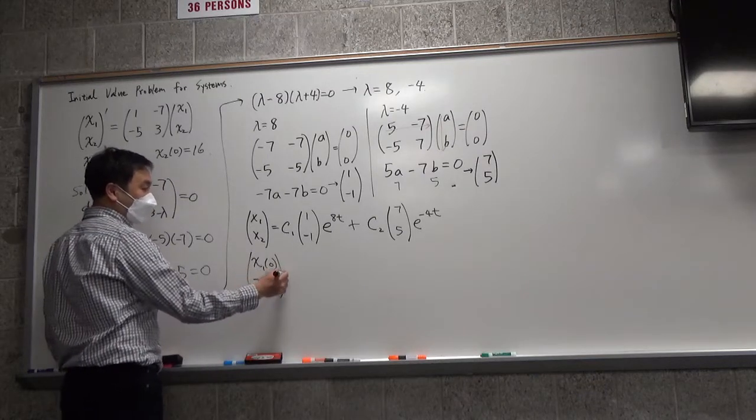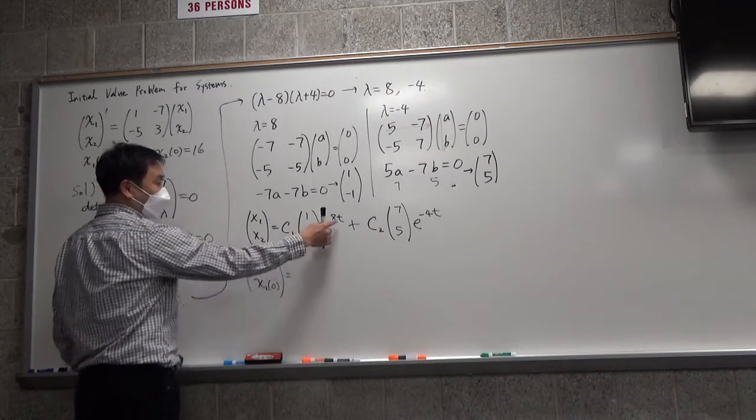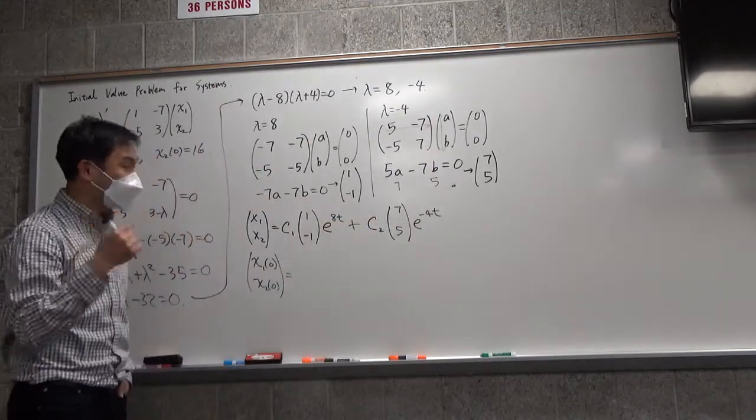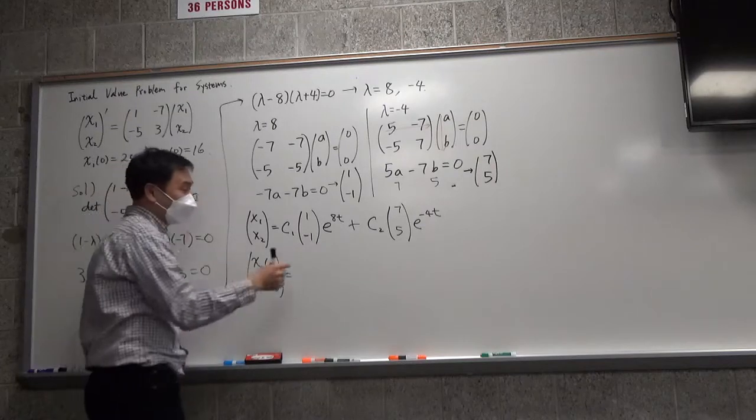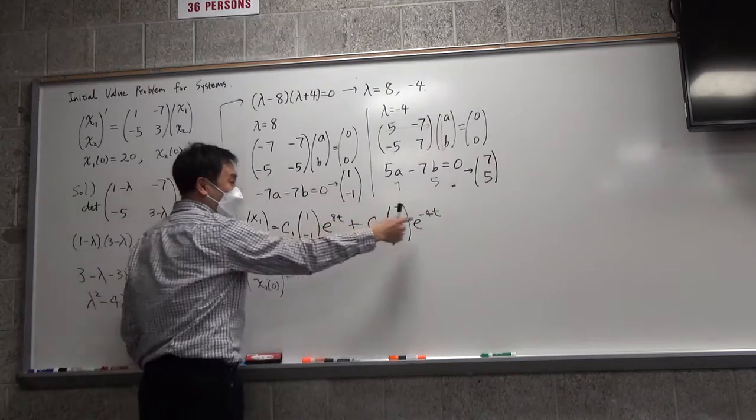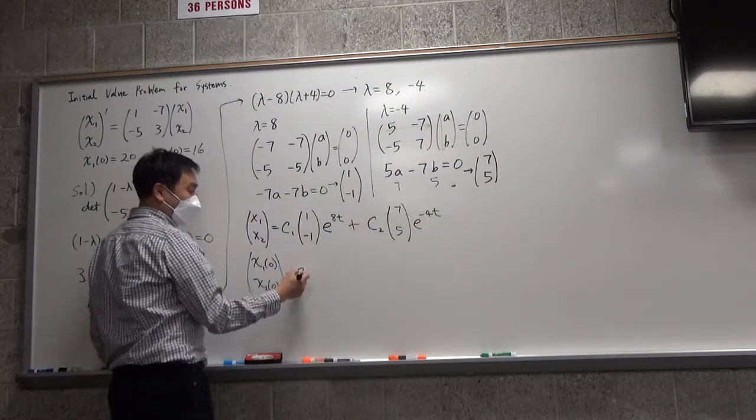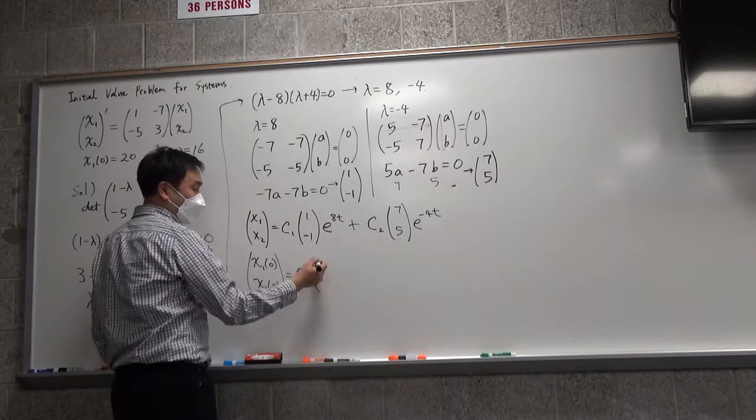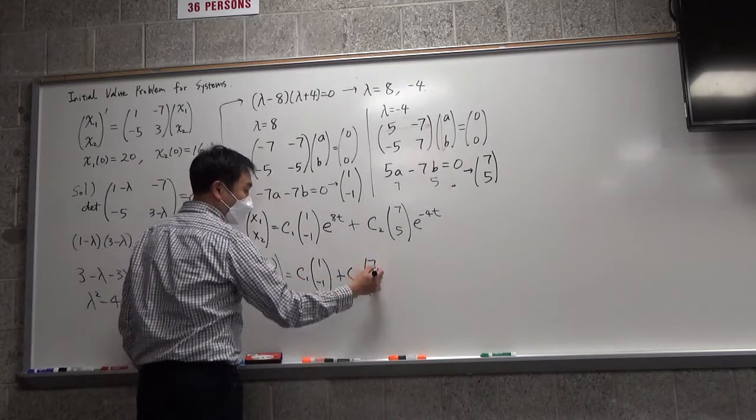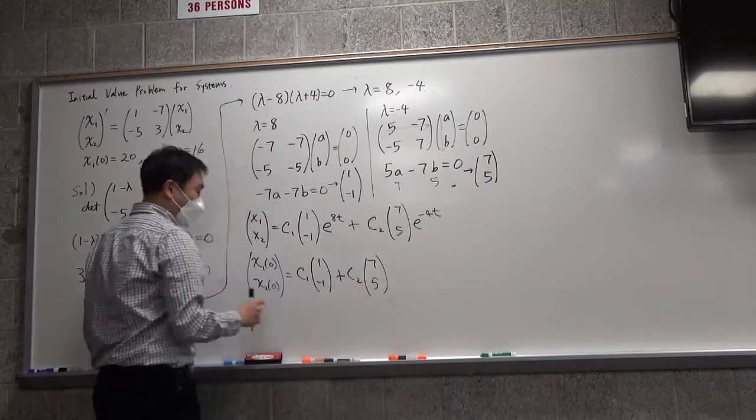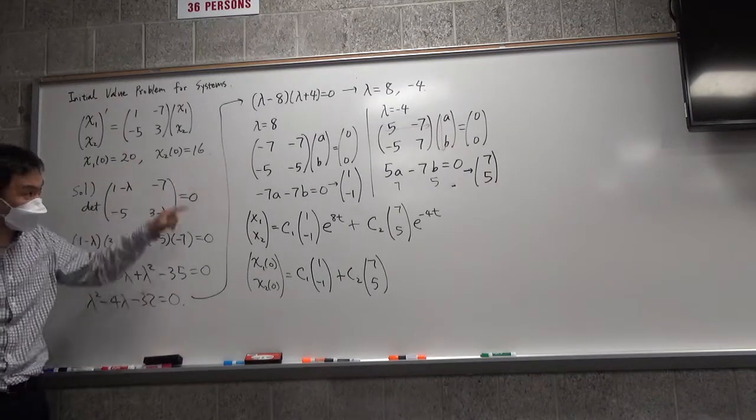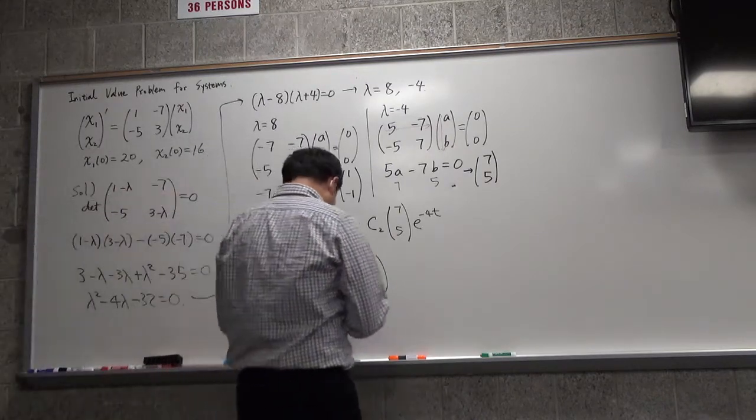Okay, so if you plug in T equals 0, what happens here? If you plug in T equals 0 and T equals 0, E to any power, E to the 0th power is always 1. Anything to the 0th power is 1. So E to the 0th power is 1, E to the 0th power is 1. So you end up with C1 times 1, negative 1, plus C2 times 7, 5 has to equal X1, 0 and X2, 0. But X1, 0 is 20, X2, 0 is 16. So that's the equation that we have to solve.